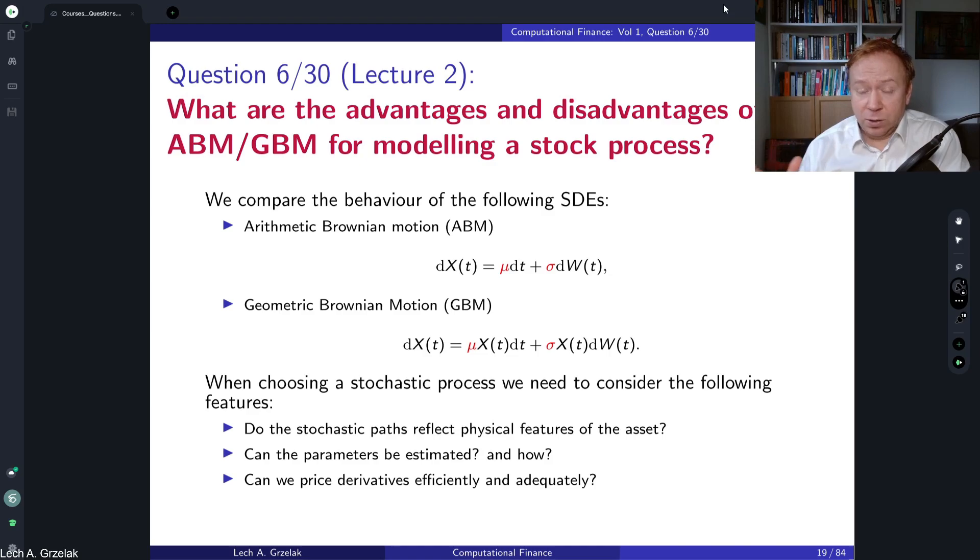So we have an exotic derivative and we need to price it. First question we can ask ourselves is this market for exotic derivatives in this asset class rich? Can we find other exotic derivatives? If we can, then of course this suggests that we should consider a model that also allows us to calibrate to the other market prices and then we can extrapolate this price to the derivative of interest.